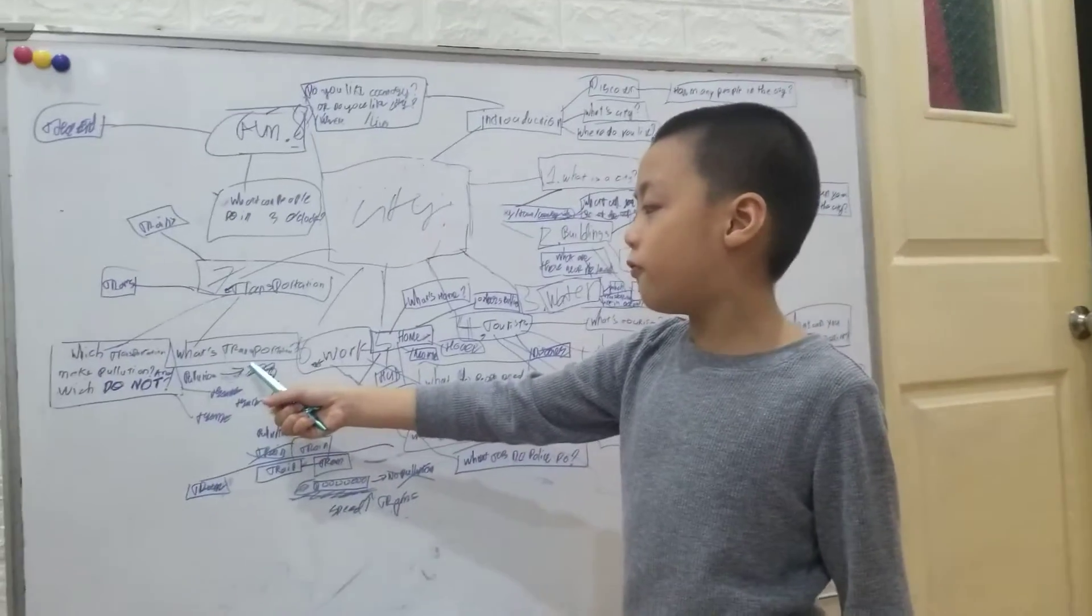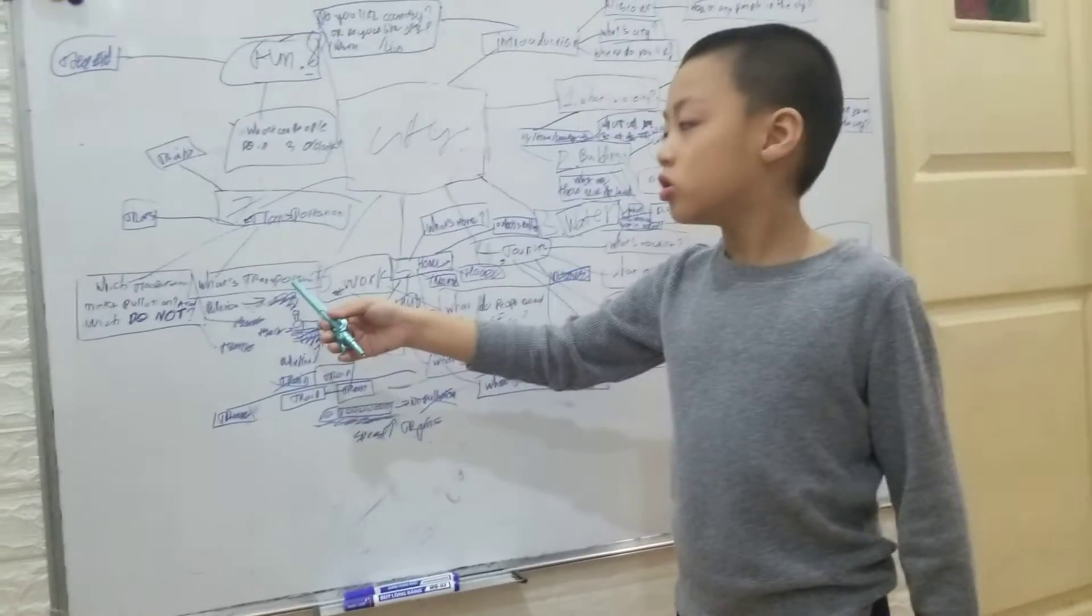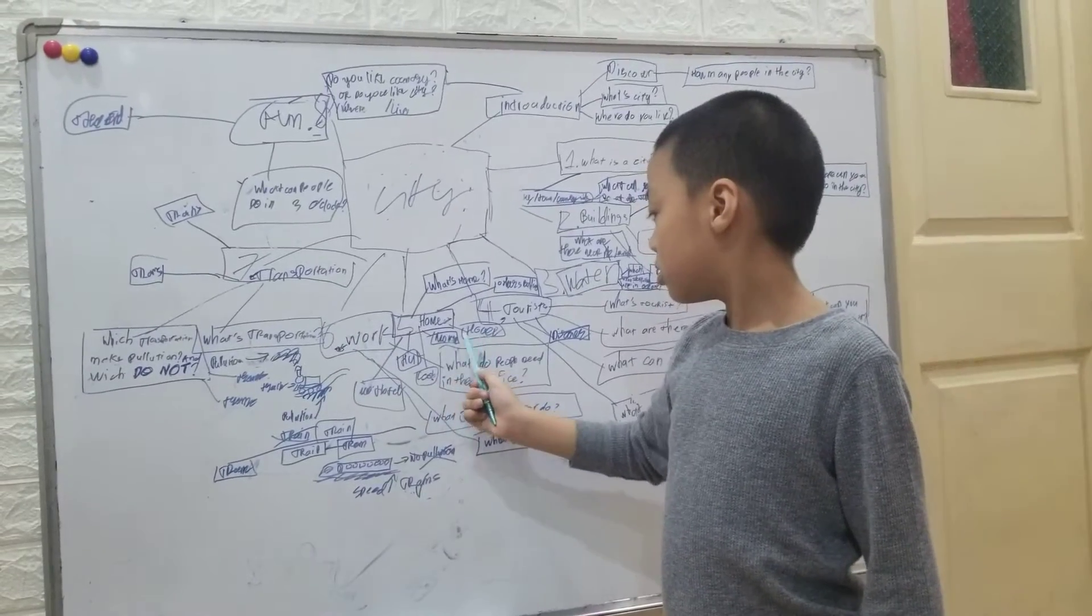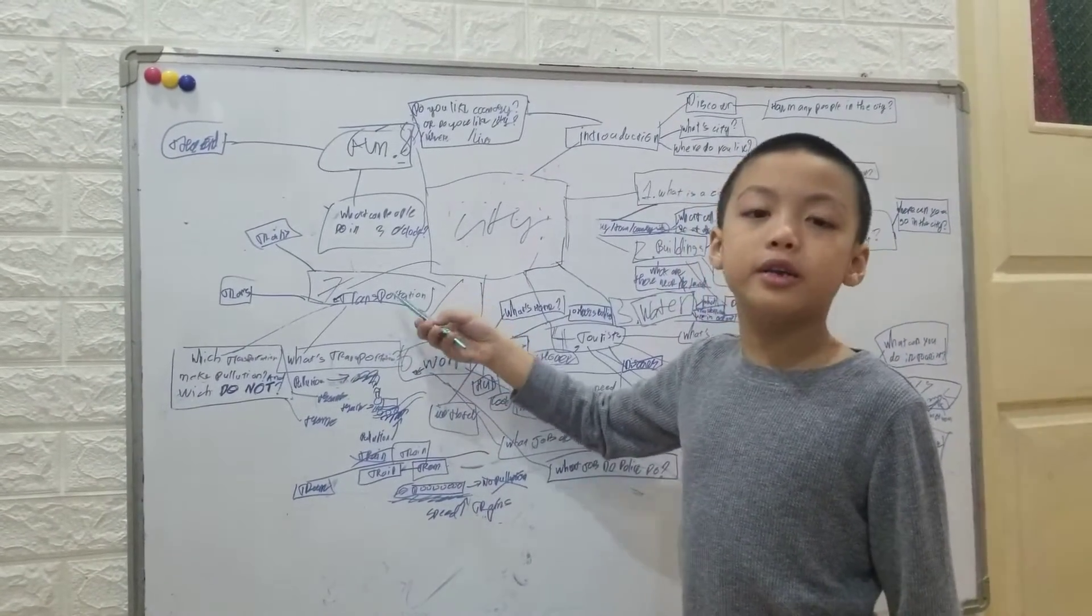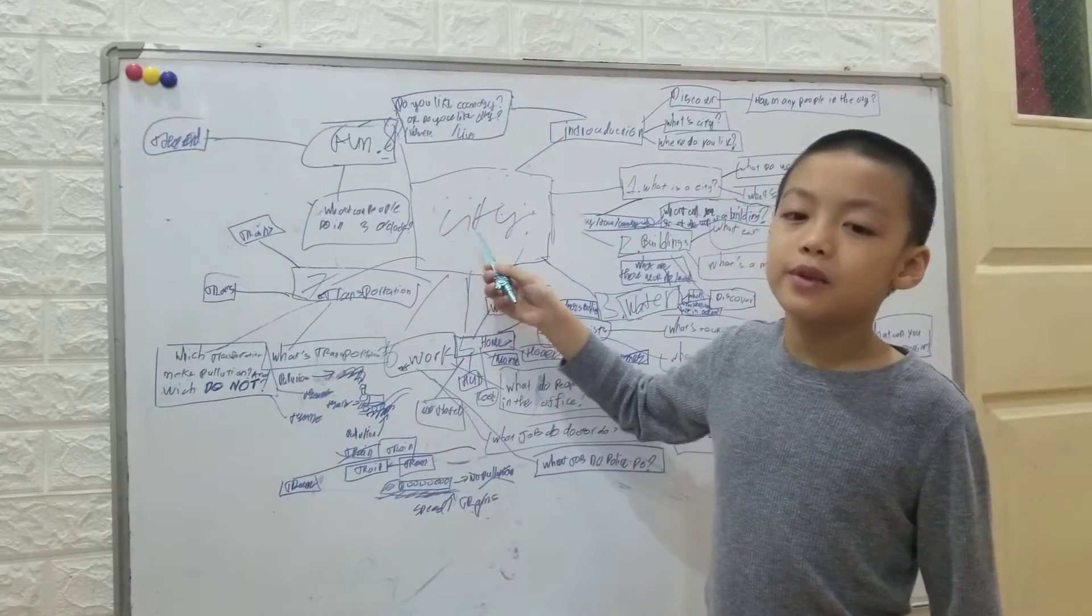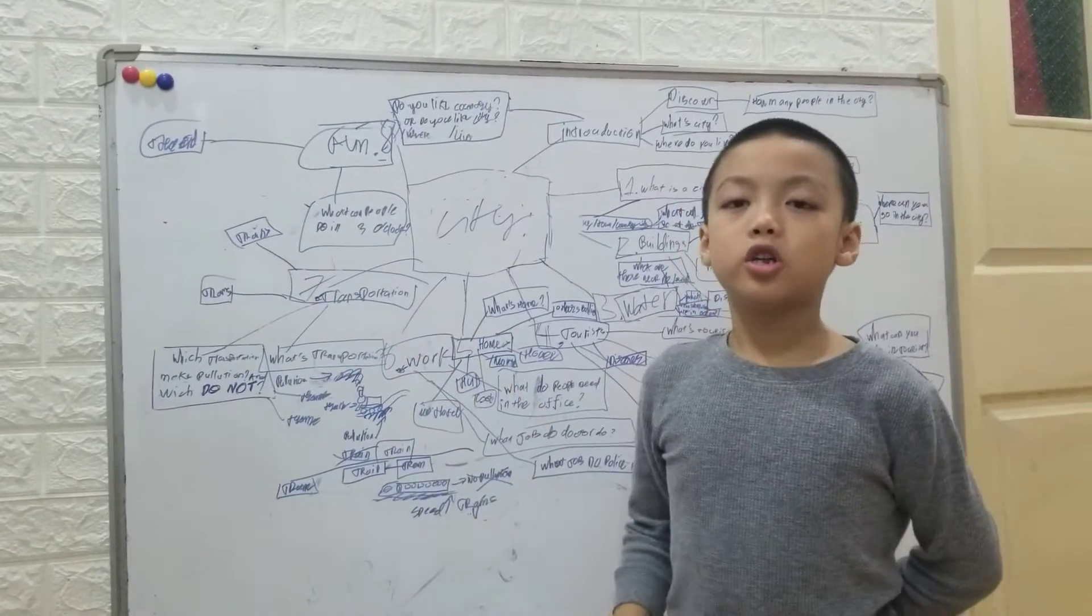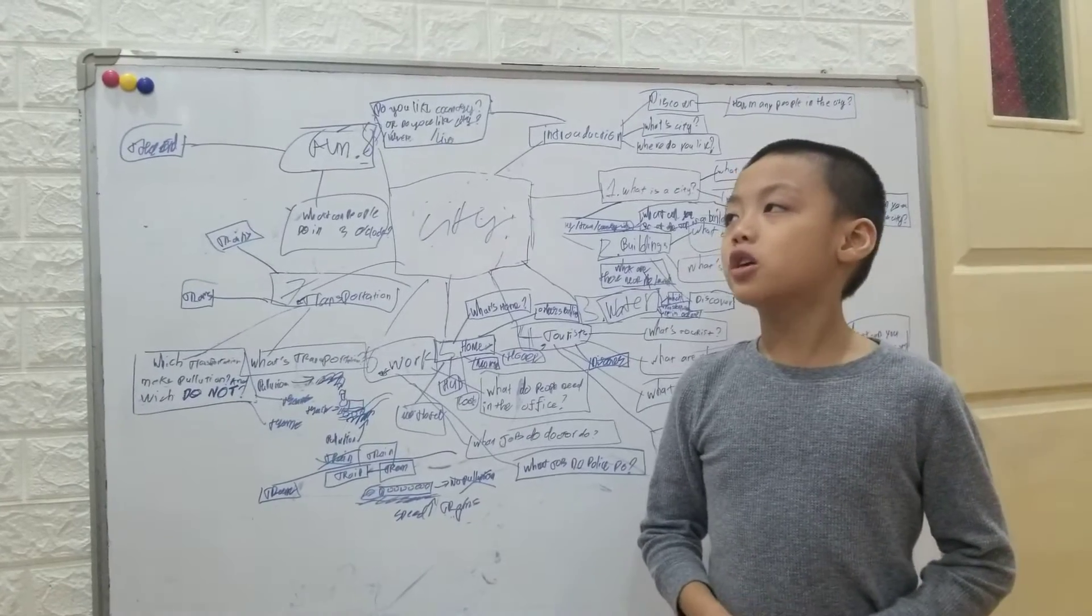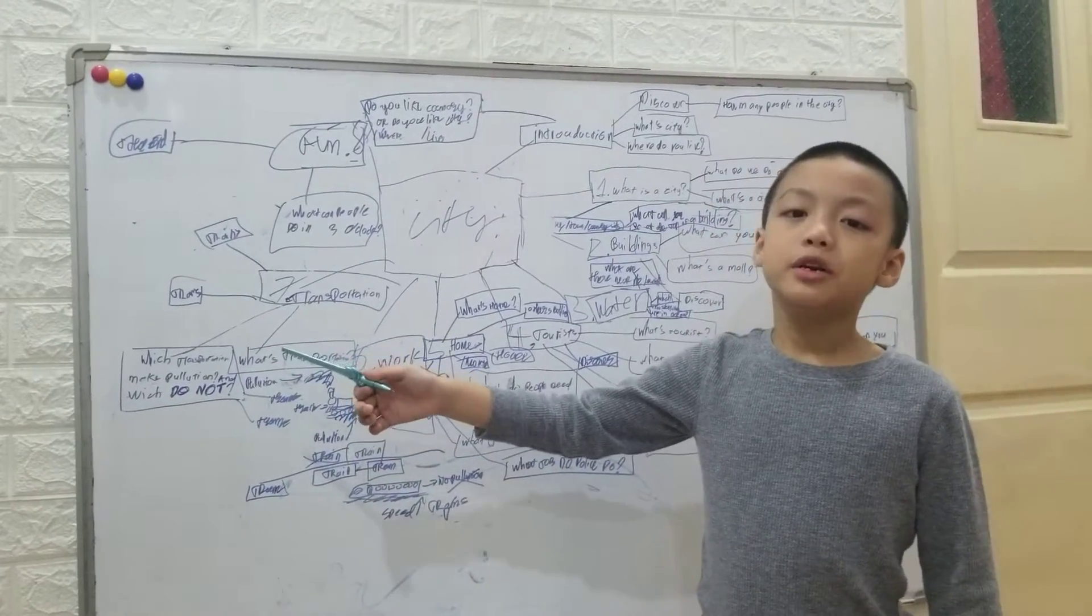And now let's move to transportation. What is transportation? Transportation can be cars, motorbikes, or trains. Cars are not good transportation. It makes pollution. Pollution makes a traffic jam. So cars are not good transportation in big cities.